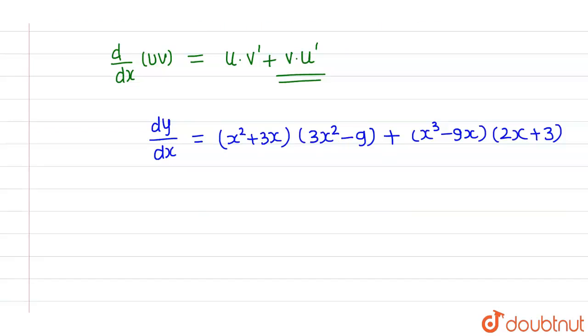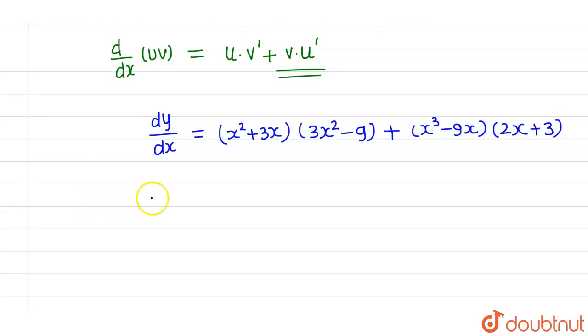So this is our differentiation. Now you can simplify this. Then this simplification will look like this is nothing but, so if you multiply x square with 3x square, then it comes out to be 3x raised to power 4. Then if you multiply x square with minus 9, so this will be minus 9x square,